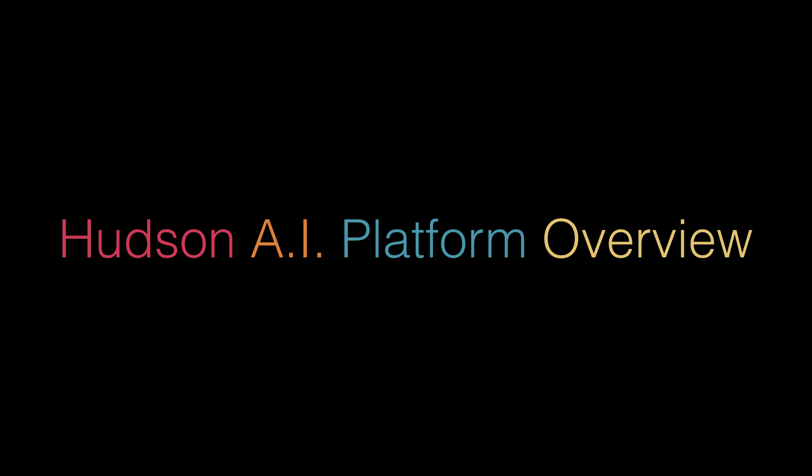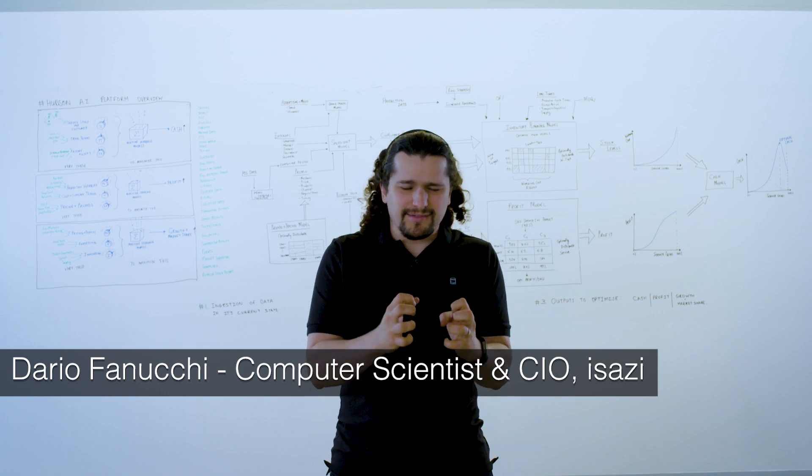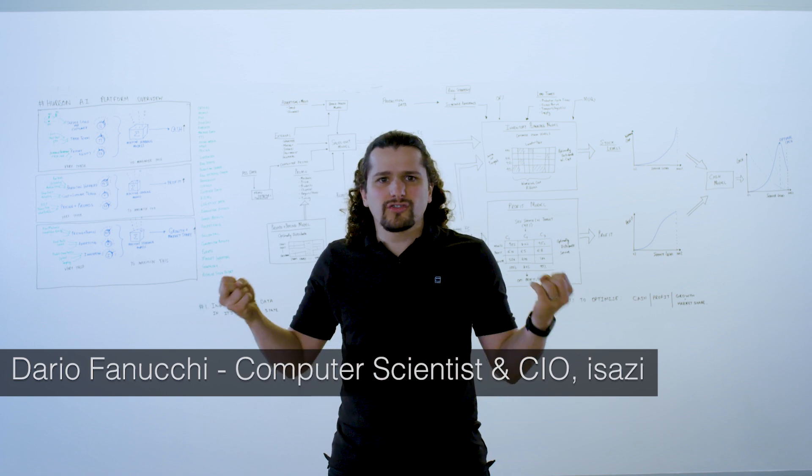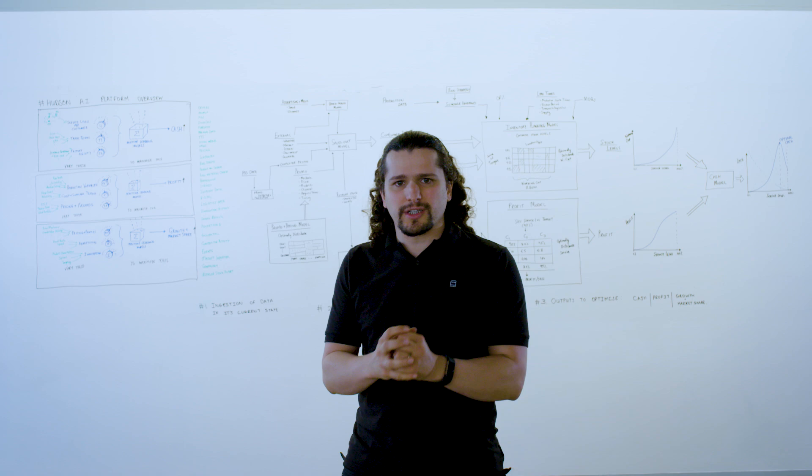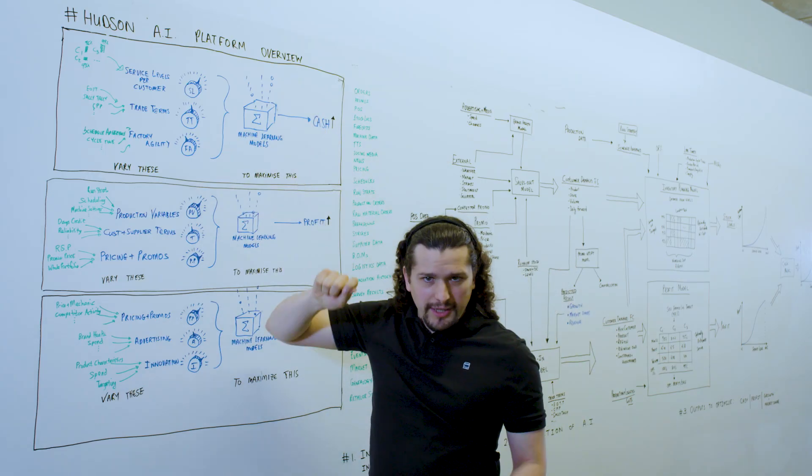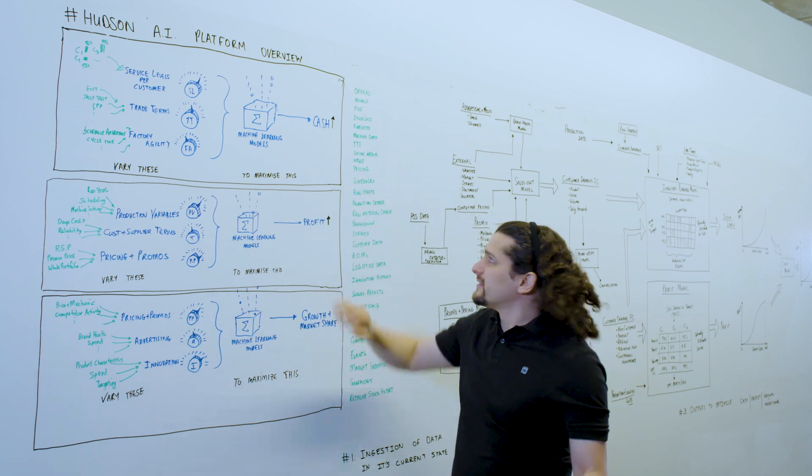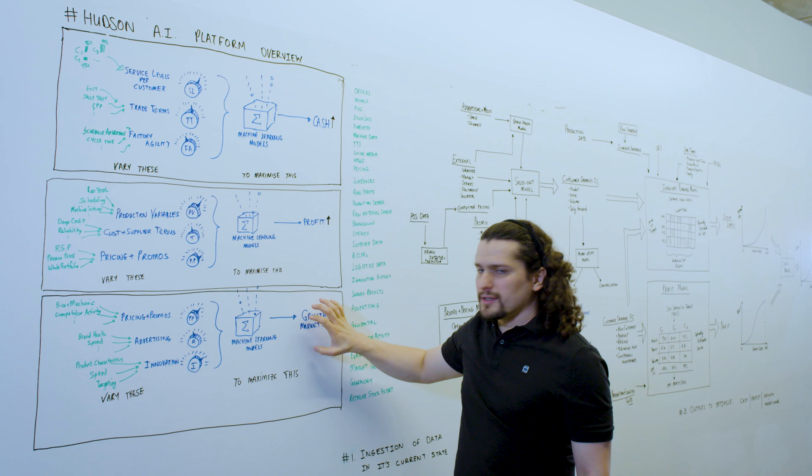The Hudson platform provides Unilever with an opportunity to understand quantitatively the impact of decisions and strategy on the key metrics of the business. It starts by building machine learning models that can understand the three key outcomes of the business: cash, profit, and growth.